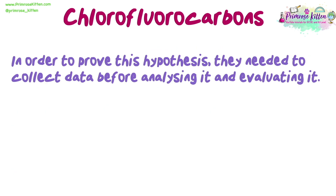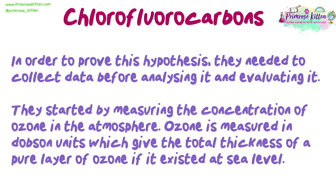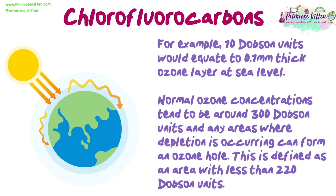In order to prove this hypothesis, they needed to collect data before analysing and evaluating it. They started by measuring the concentration of ozone in the atmosphere. Ozone is measured in Dobson units, which gives the total thickness of a pure layer of ozone if it existed at sea level — for example, 10 Dobson units would equate to a 0.1 mm thick ozone layer at sea level. Normal ozone concentrations tend to be around 300 Dobson units, and any area where depletion is occurring can form an ozone hole, defined as an area with less than 220 Dobson units.